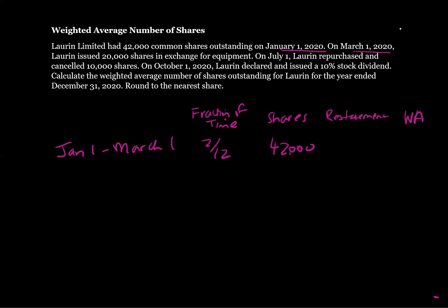Next, on March 1st, Lauren issued 20,000 shares in exchange for equipment. So the period from March 1st to July 1st has 62,000 shares outstanding — that's 42,000 plus 20,000. March 1st to July 1st covers March, April, May, June — four months, so four over 12.